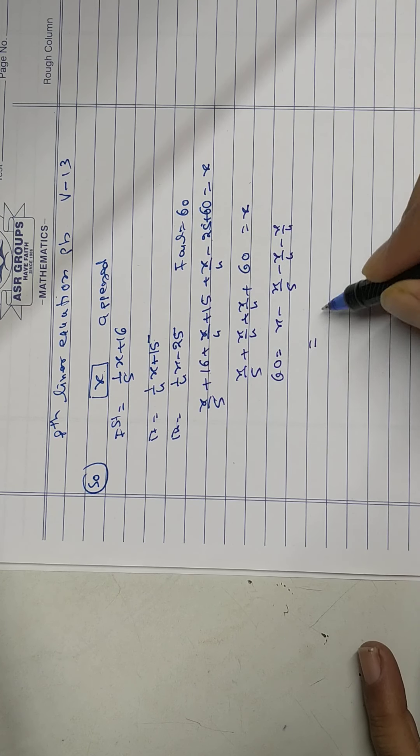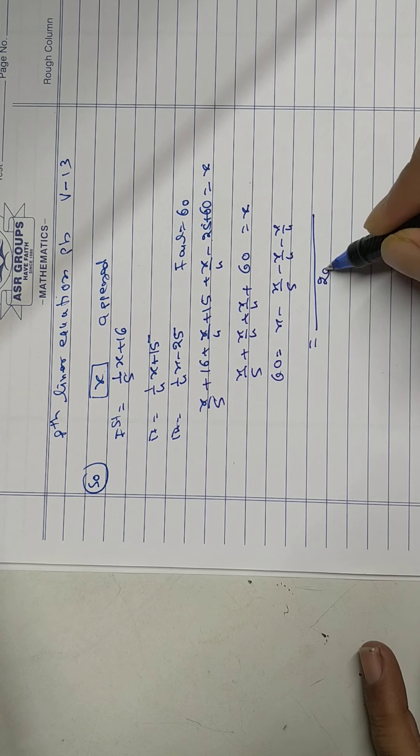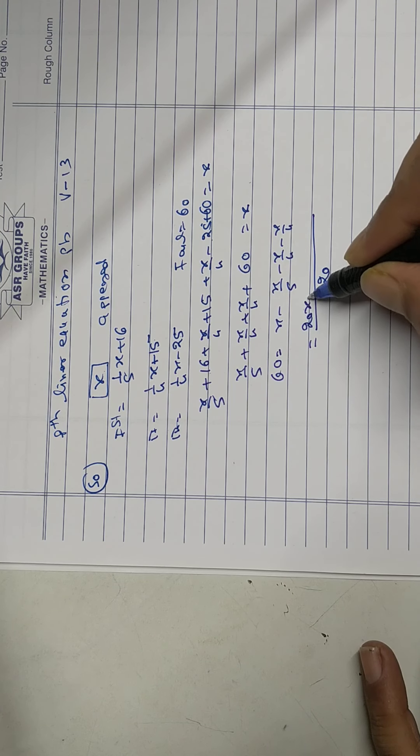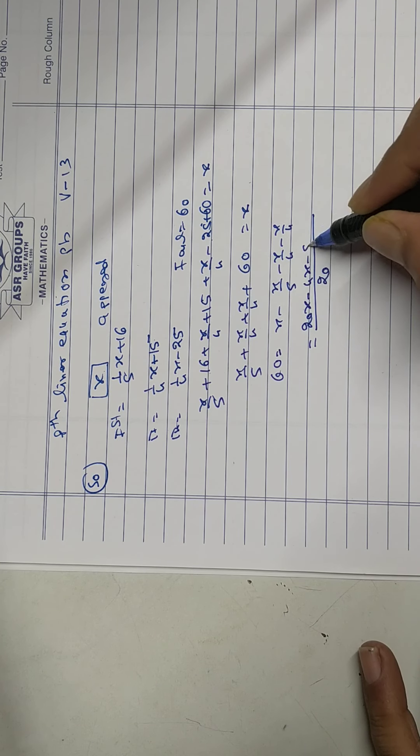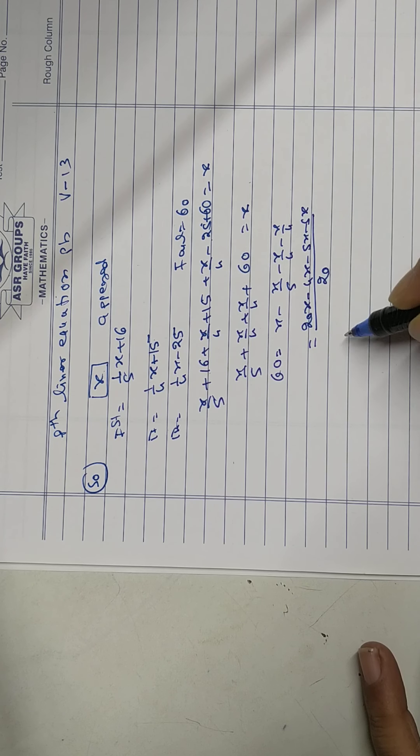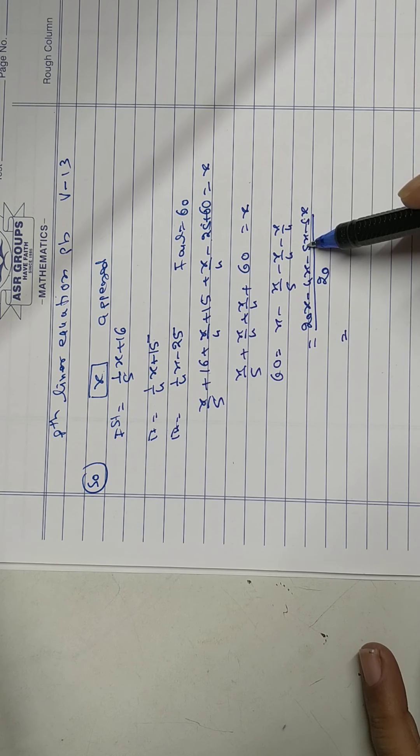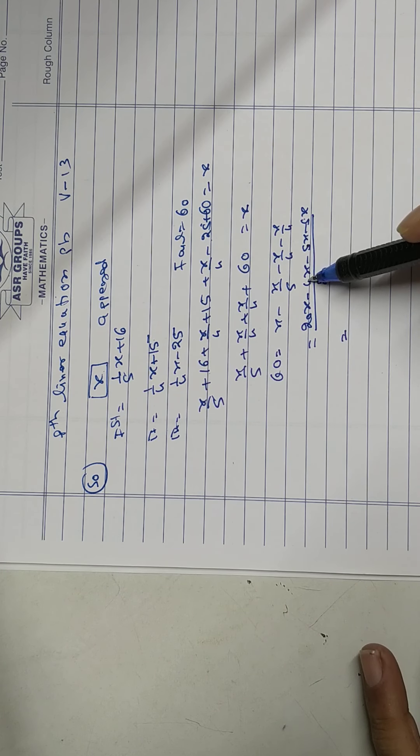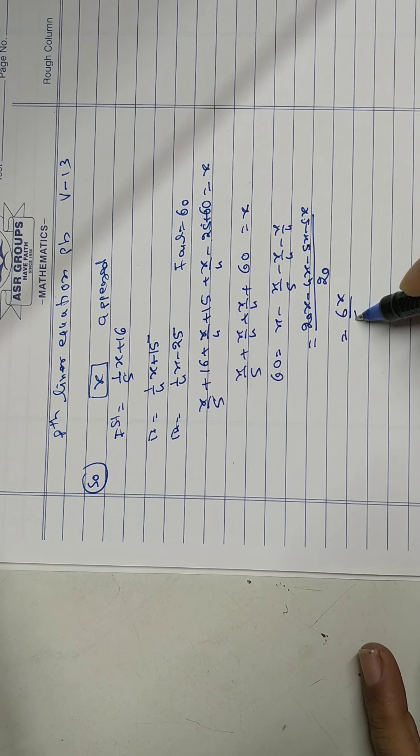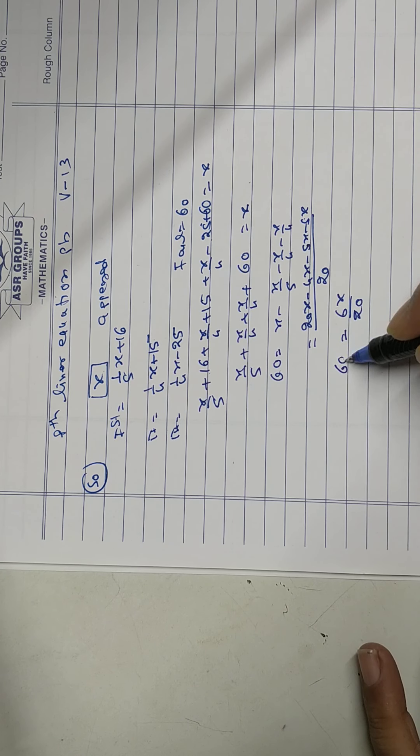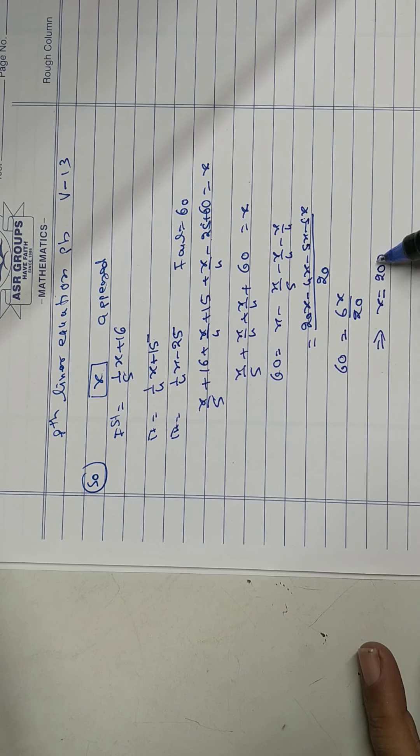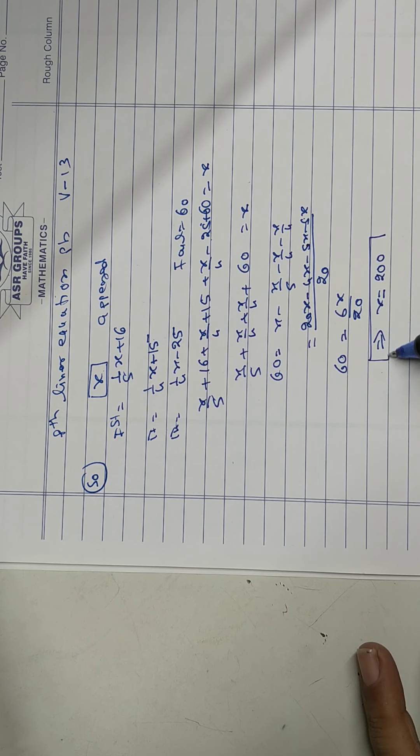Take 20 as LCM. 20x minus 4x minus 5x minus 5x. 5 plus 4, 5 plus 5, 10 plus 4, 14. 6x upon 20 equal to 60. Calculate x equal to 200.